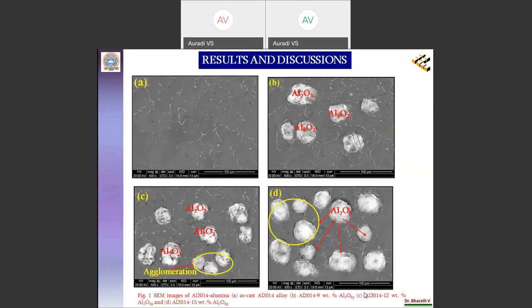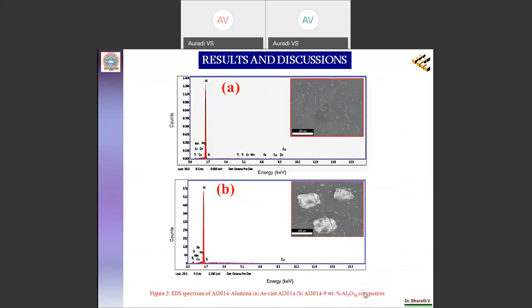Figure 1A will show the SEM images of as-cast, whereas the figures will show the SEM images of 9 to 15 weight percentage of AL203 particulates, which clearly give you an idea of how uniformly AL203 particulates are dispersed.